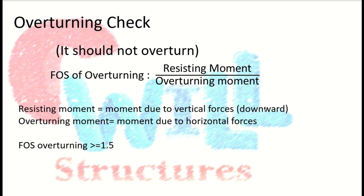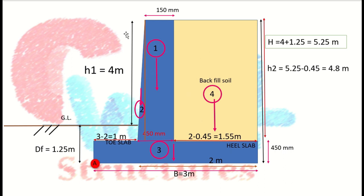Now let's calculate the resisting moment due to vertical forces. I have divided the retaining wall into different parts: element 1 is the rectangular portion of the stem, element 2 is the triangular portion of the stem, element 3 is the base slab, and element 4 is the backfill soil. We calculate the self-weight for each element as volume times density of the material.